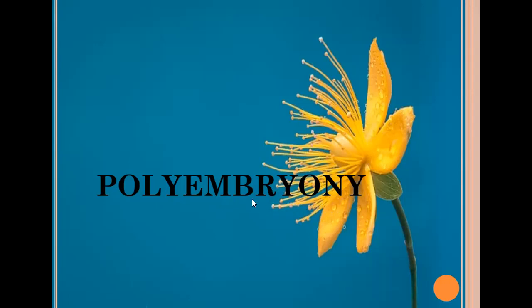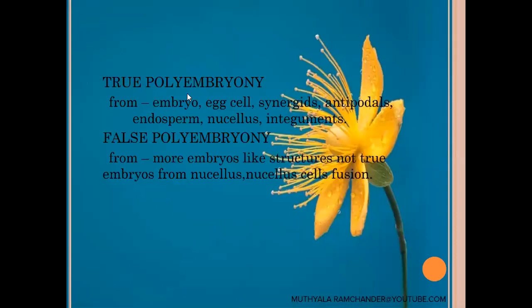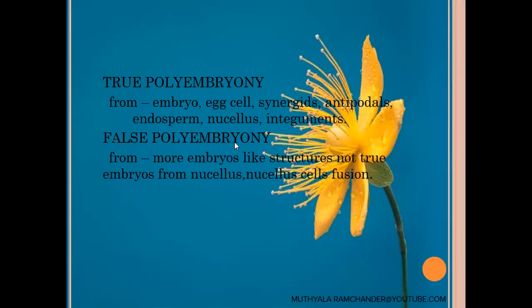Today we discuss polyembryony in angiosperms. Polyembryony in angiosperms is mainly of two types: one is true polyembryony, and the second one is false polyembryony.